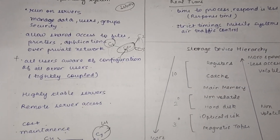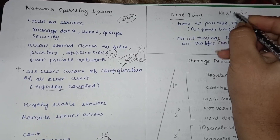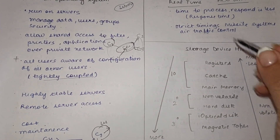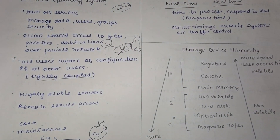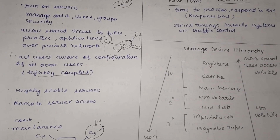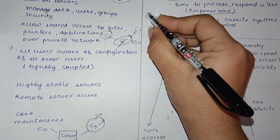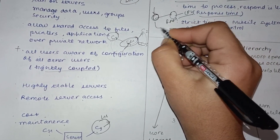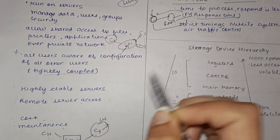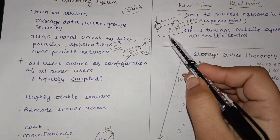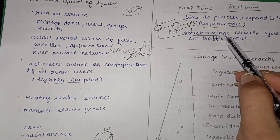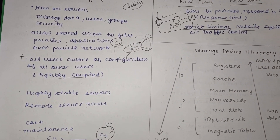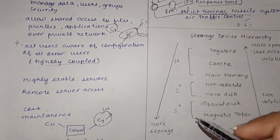The real-time operating system focuses on reducing response time — the total time taken to process an inquiry or instruction and respond to it. For example, to handle a process, it must be loaded into RAM and executed by the CPU; the total time for this is the response time, which is minimized in real-time OS. Because these systems are very efficient with strict timing requirements, they are used in systems like missile systems and air traffic control.